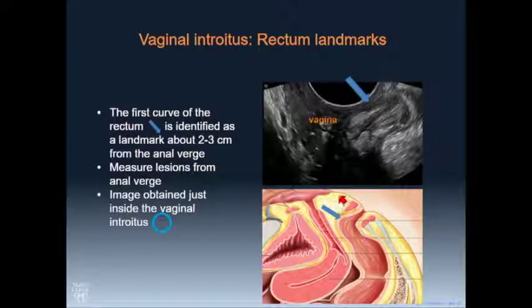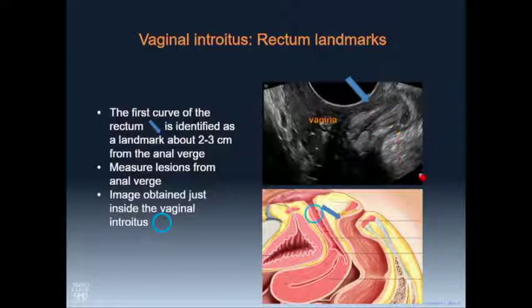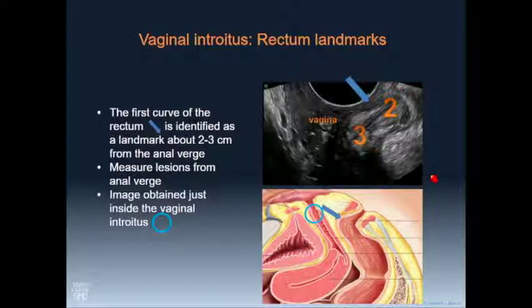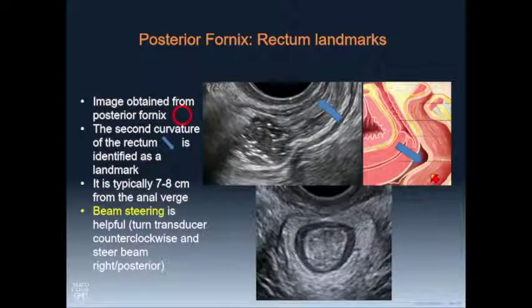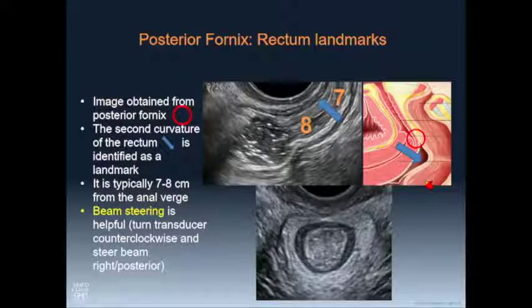A couple of things about how to figure out where you're at. When you're in the vaginal introitus, that location is about two to three centimeters from the anal verge. When you get into the posterior fornix, you're about seven to eight centimeters from the anal verge, and then you can kind of count up from there.